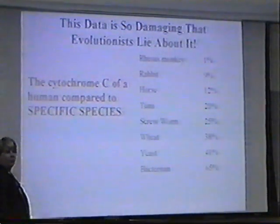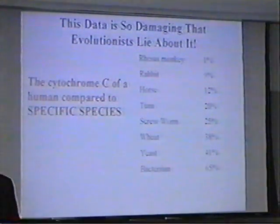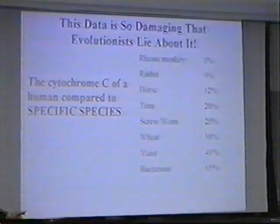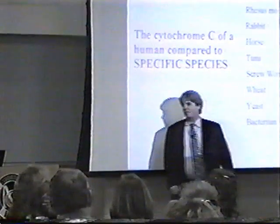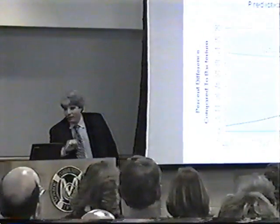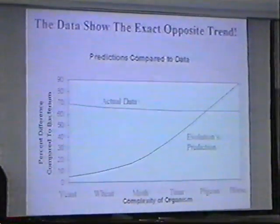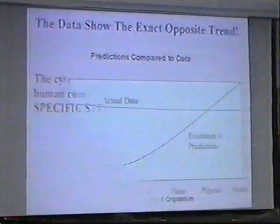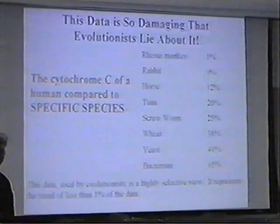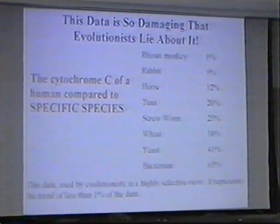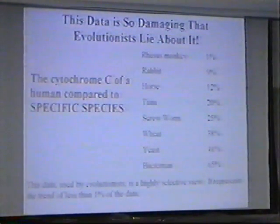This is the one sequence that is always shown when people talk about amino acid sequences and evolution. The problem is, this represents less than 1% of the data. In order to get this sequence, you have to cherry pick — you have to take this particular species, then look around and take this particular species. That's the only way you can get this trend. The vast majority — more than 99% of the data — look like this. But you'll never see that discussed in evolutionary sources.